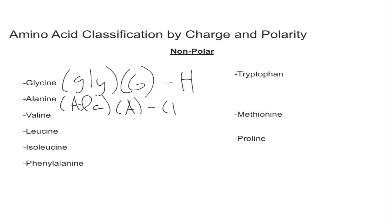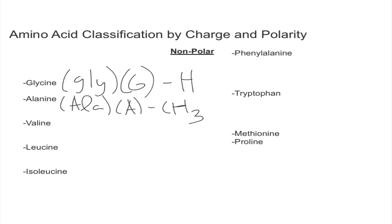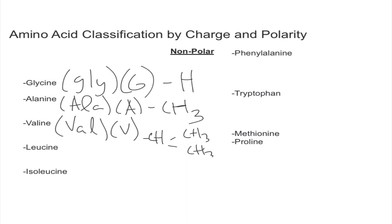Next we have alanine, abbreviated ALA with one-letter A. Its side chain is a CH3 group. Then we have valine, abbreviated VAL with a V. We're just adding two more carbon groups to alanine, so we have a CH with two CH3 groups both coming off the second carbon, the first carbon of course being the main carbon of the amino acid.